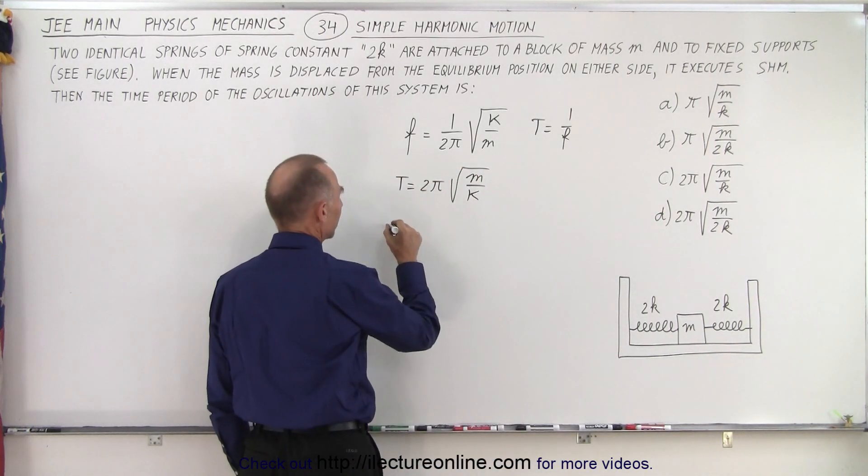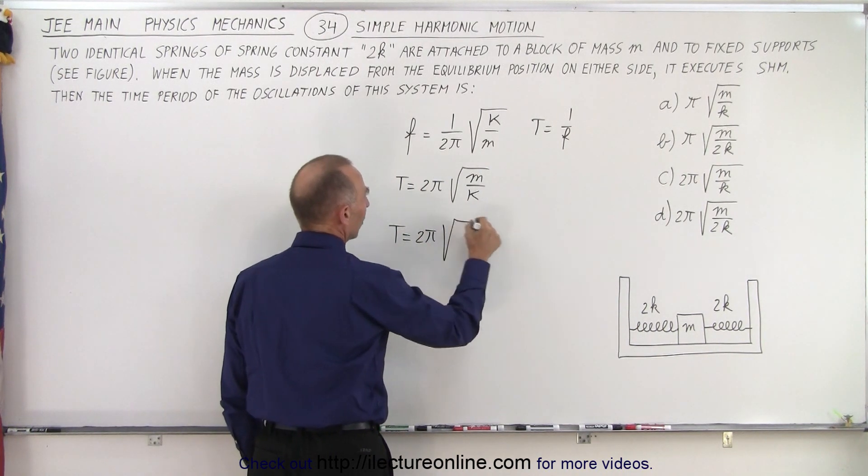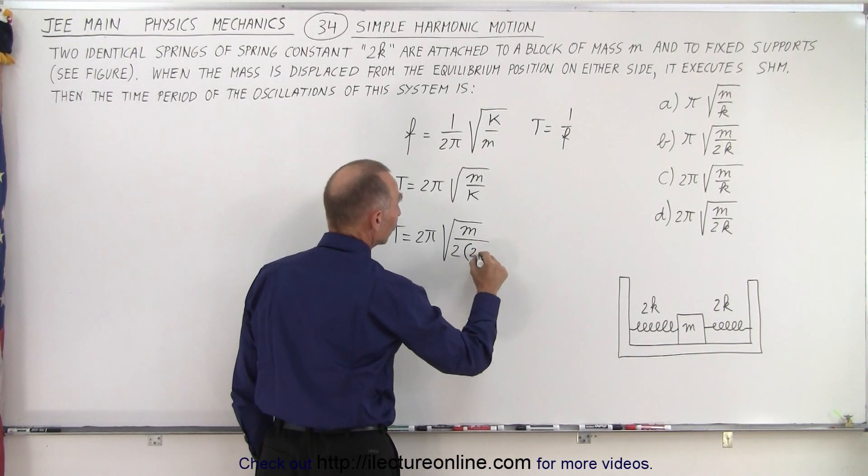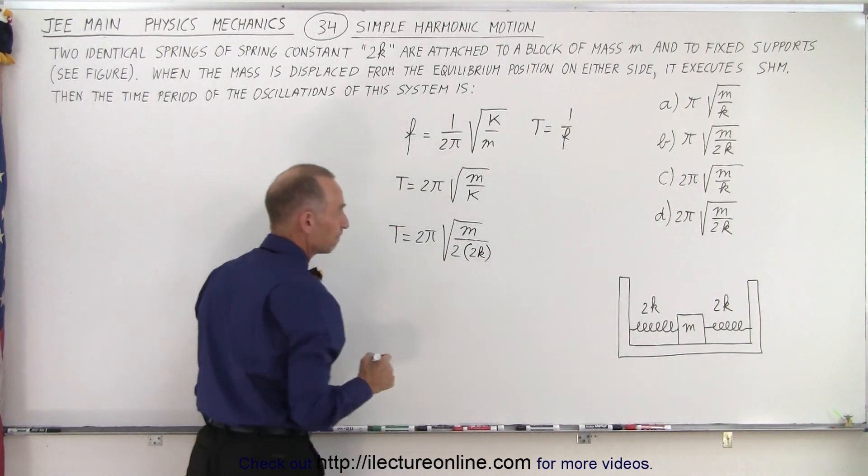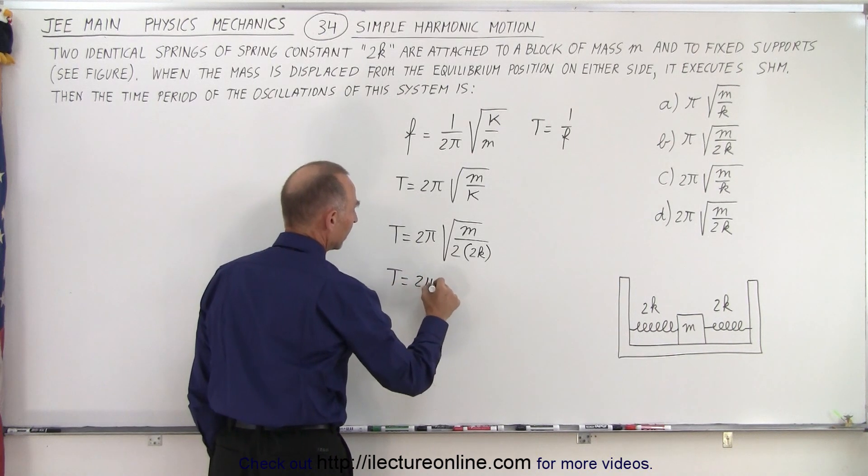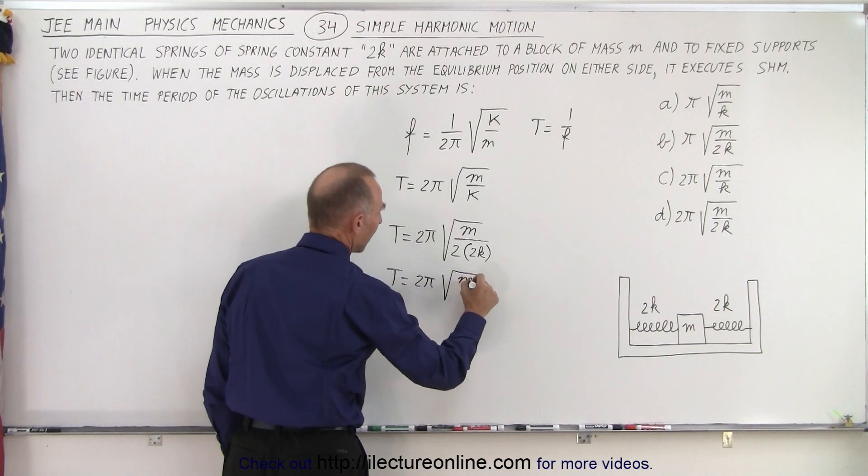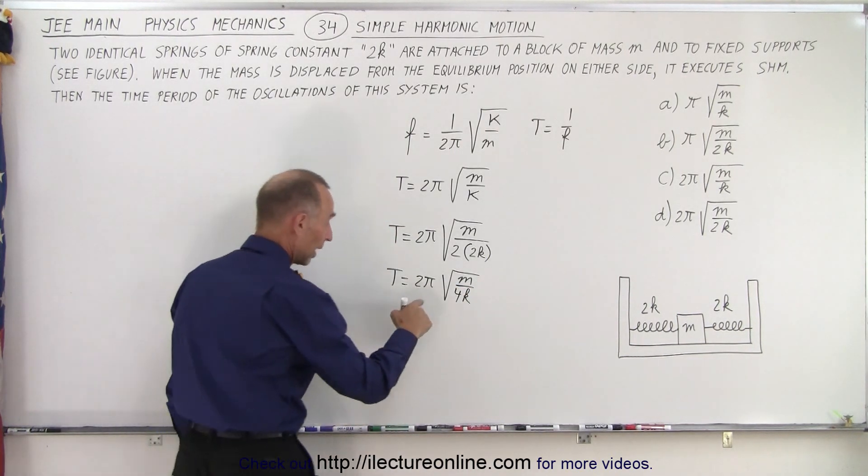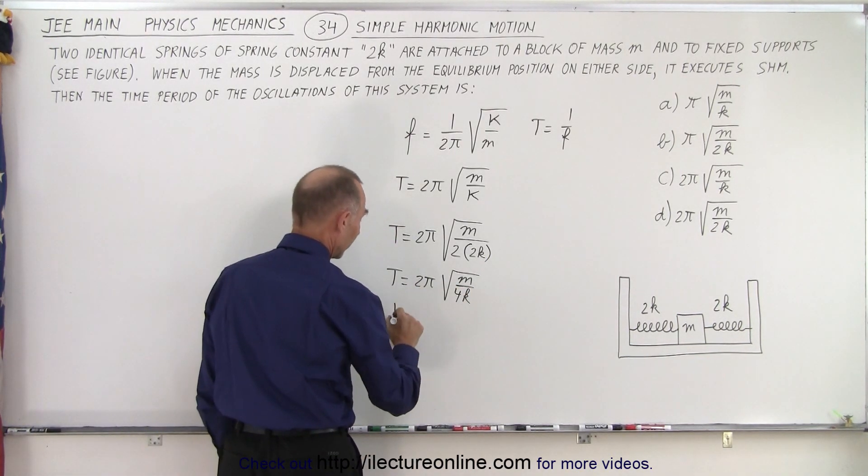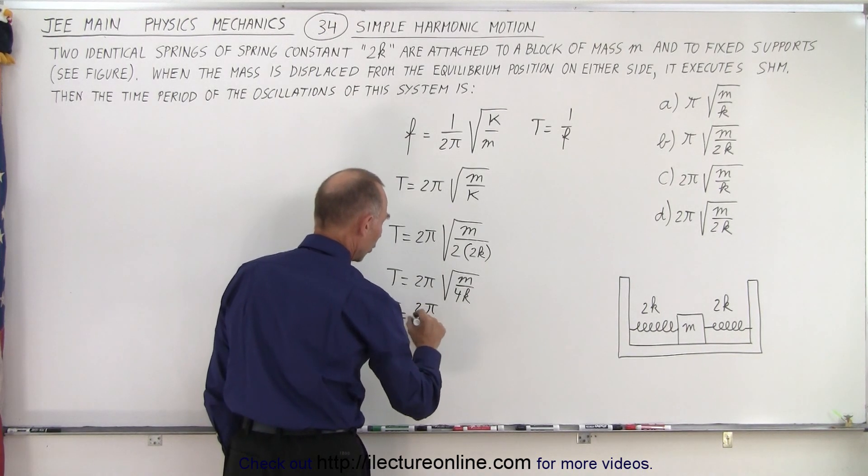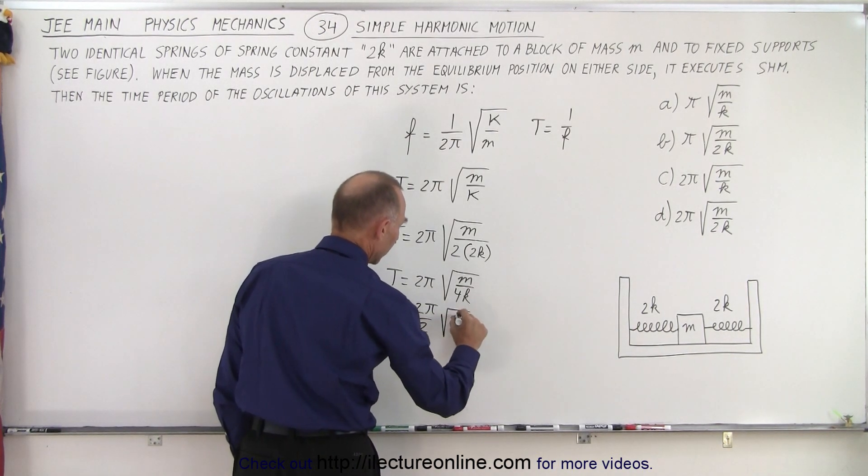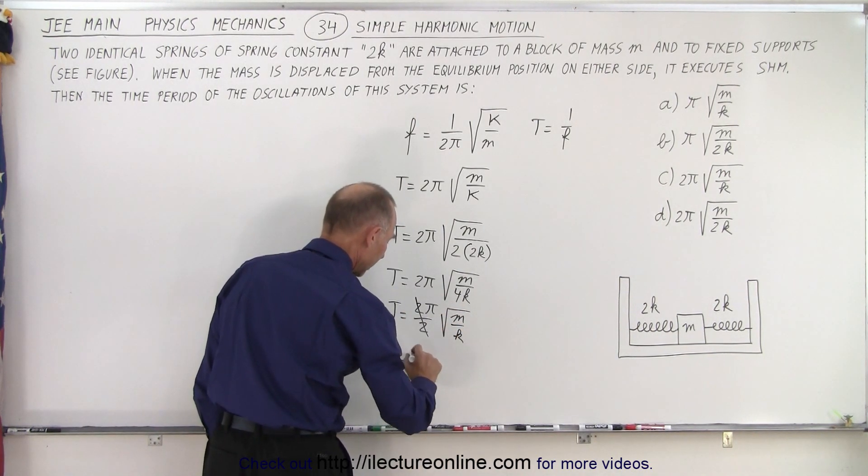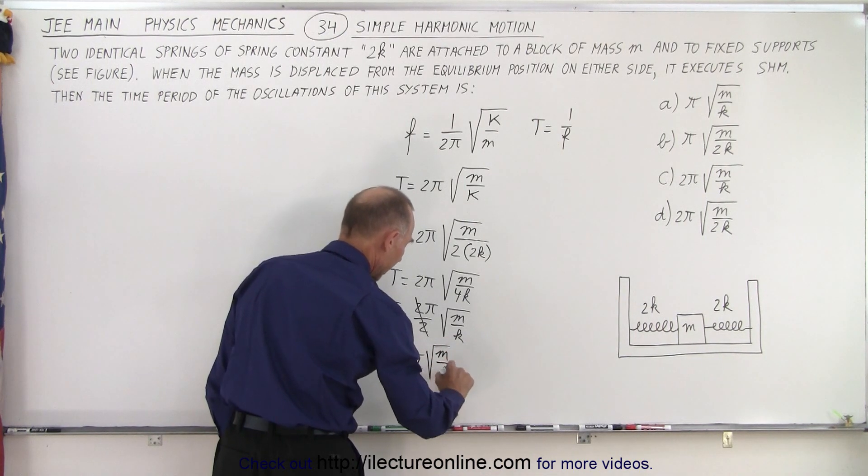So that means that the period is equal to 2π times the square root of m divided by 2 (because there's two springs) and each spring has a spring constant of 2k. Which means that the period is equal to 2π times the square root of m over 4k, and of course the square root of 4 is 2. We can pull the two out, cancel it with this two, so we have T is equal to 2π over 2 times the square root of m over k, and of course the two's cancel, so the period is equal to π times the square root of m over k.